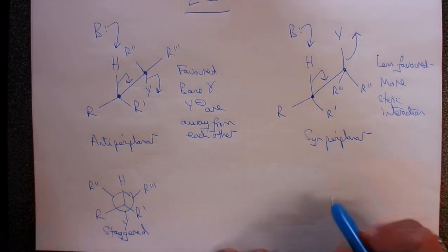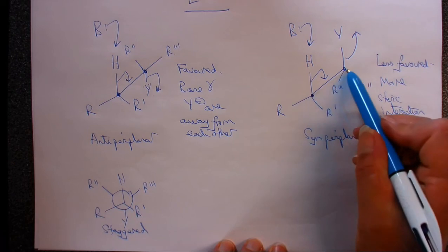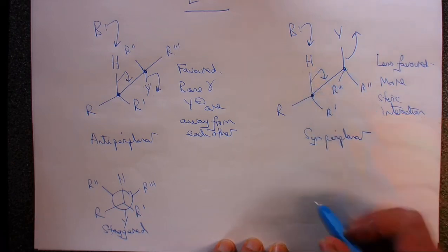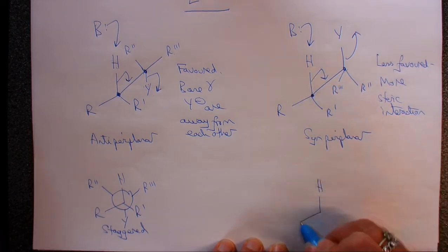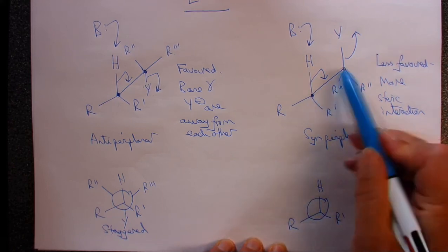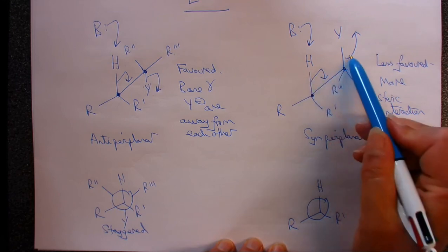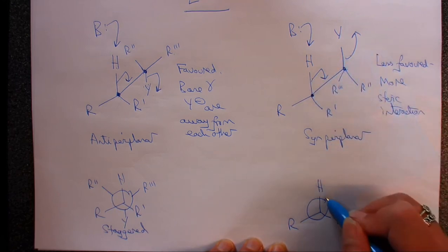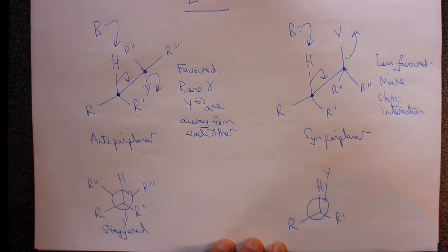In contrast, if we do the same thing here, so we look along this bond, at the front we've still got our hydrogen, we've got our R, we've got our R1. If we were to look along that bond, this hydrogen is directly in front of that Y. So our Y, even as we draw it, we see it becomes a bit awkward. They're trying to occupy the same area of space.